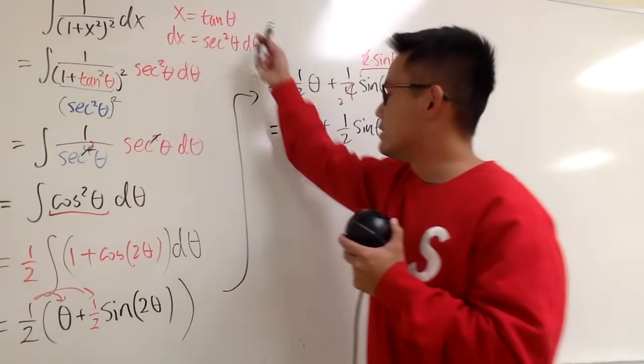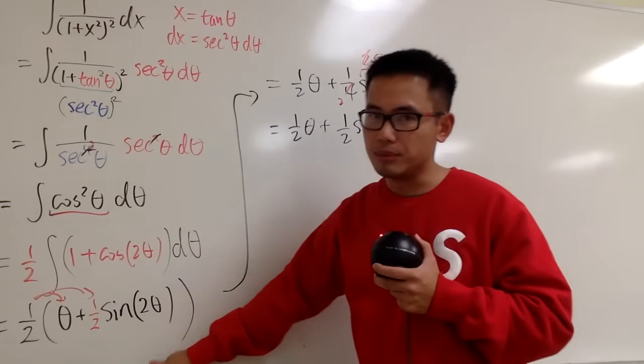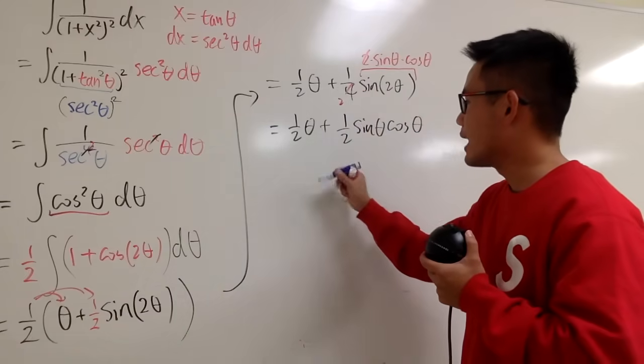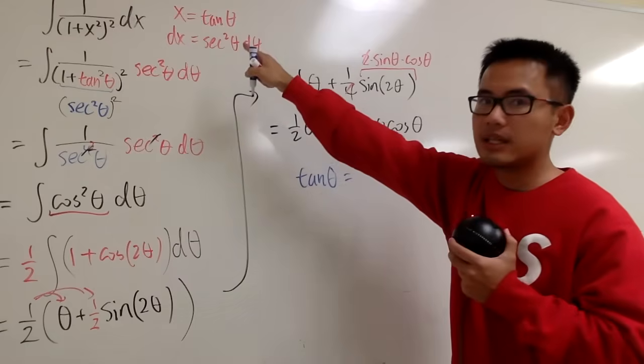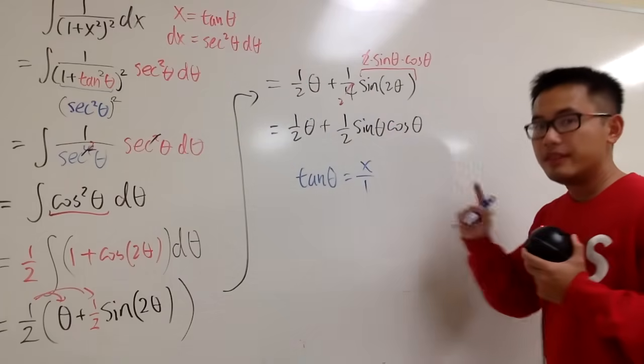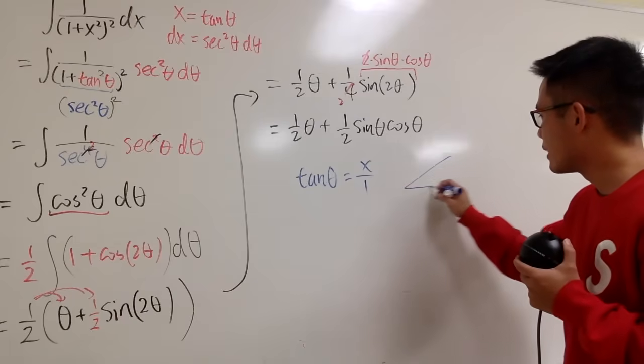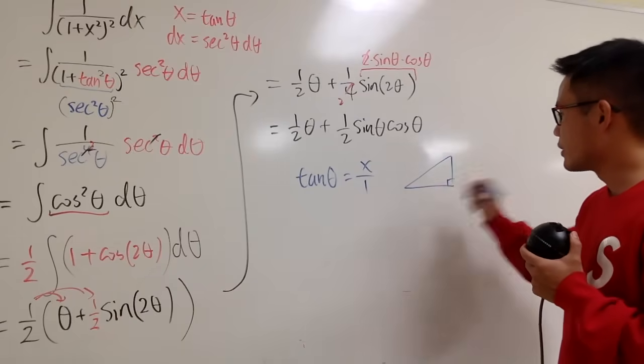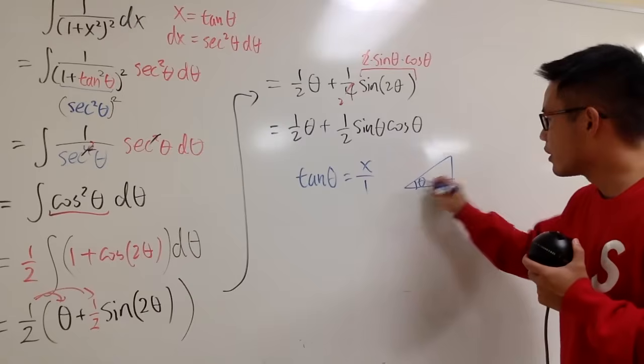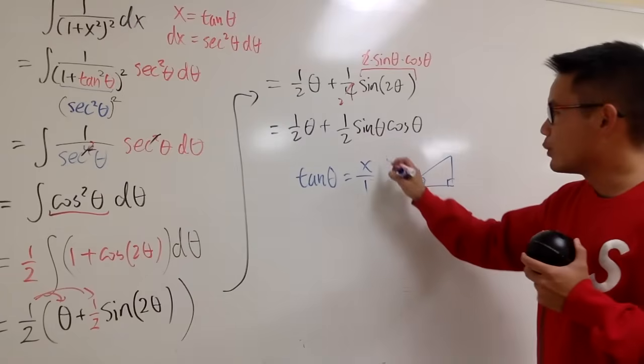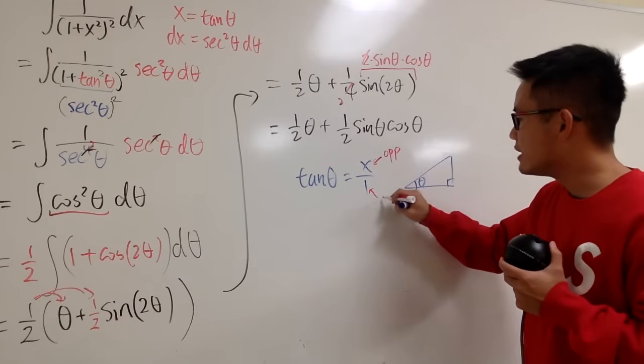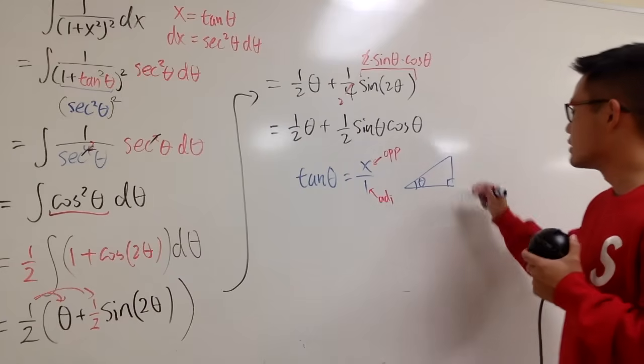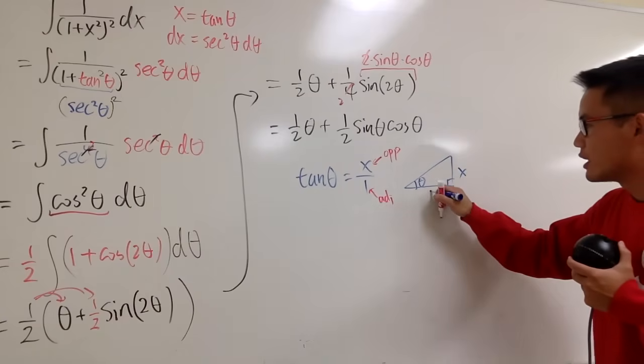First of all, we have to utilize this information. We know that because tangent theta is equal to x, which is equal to x over 1, this is telling us we can draw a right triangle with a right angle here, and let's just put the theta here. And based on this, we know that the opposite is x, and the adjacent is 1.